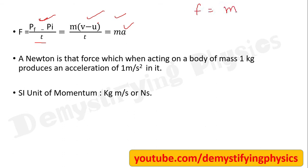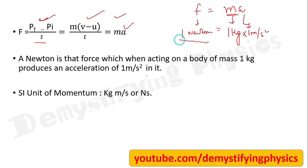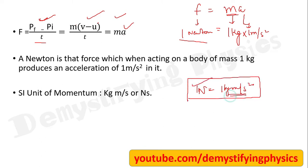The SI unit of force is Newton. 1 Newton equals 1 kg·m/s². So 1 Newton is that force which, when acting on a body of mass 1 kg, produces an acceleration of 1 m/s². Conversely, if a body of mass 1 kg moves with acceleration 1 m/s², the force produced is 1 Newton.